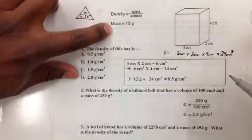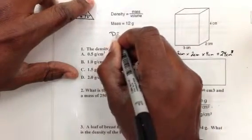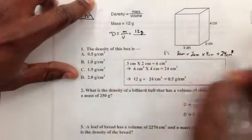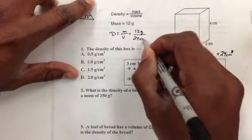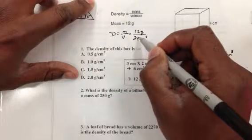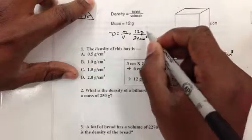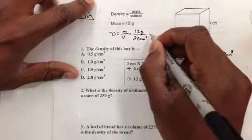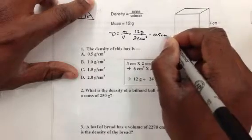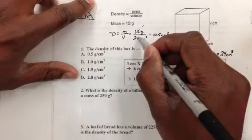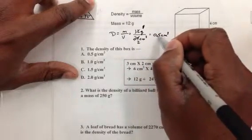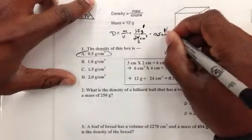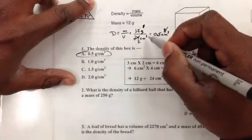It tells us right here that our mass is 12 grams. So if I set up my formula, density is going to equal mass over volume. My mass is 12 grams, don't forget the units, and the volume is 24 centimeters cubed. You can see that 24 is twice as much as 12, so we can reduce this and we'll get 1 over 2, which is one half. The decimal for one half is 0.5. So our answer is 0.5 grams per centimeter cubed.